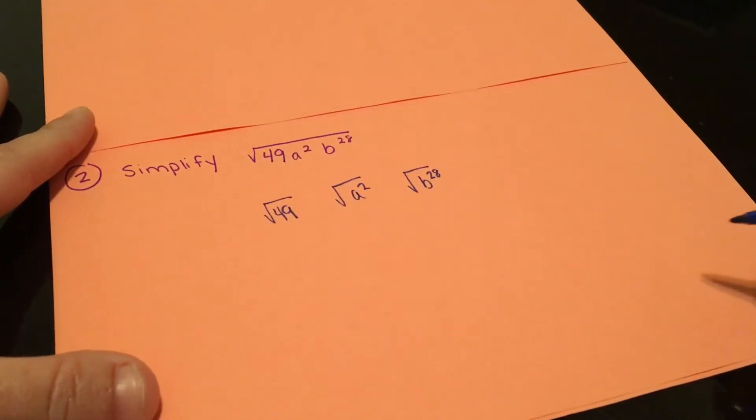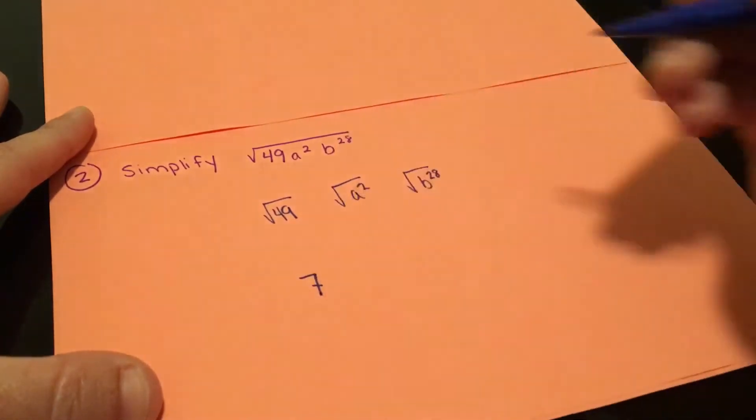Then we're going to take each of these and simplify. So we have square root of 49. That's nice and easy. 7.